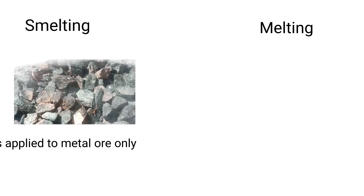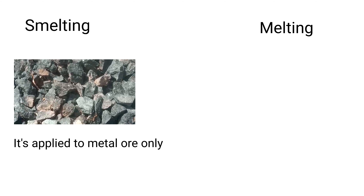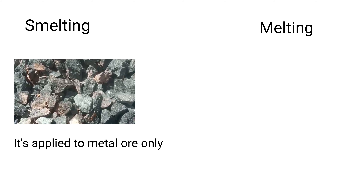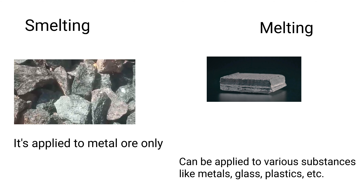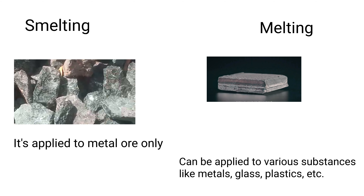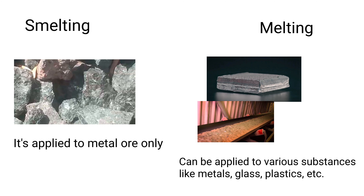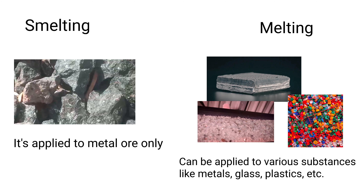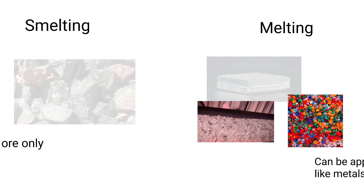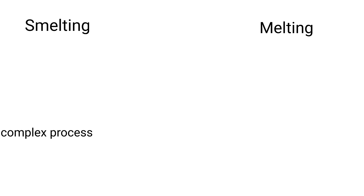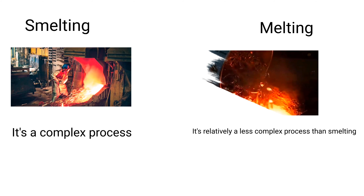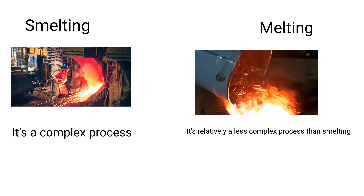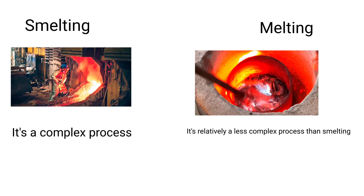Fifth, smelting is applied to metal ore only, while melting can be applied to various materials like metal, glass, plastic, etc. Sixth, smelting is a complex process, while melting is relatively a less complex process than smelting.